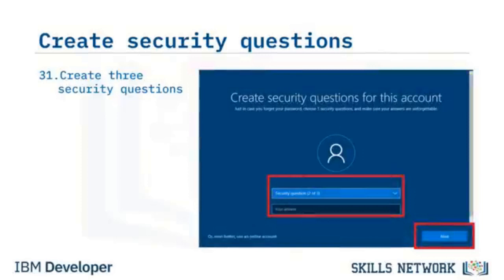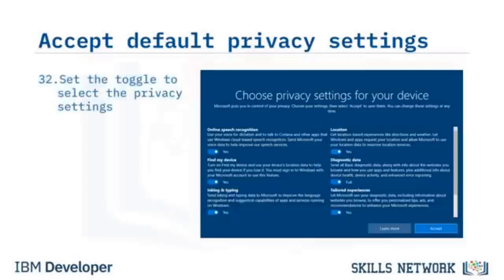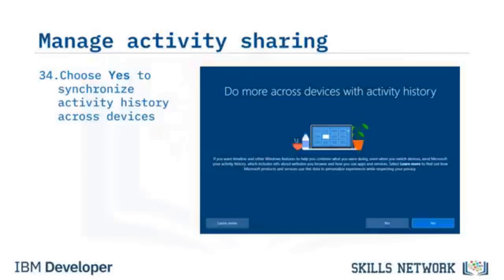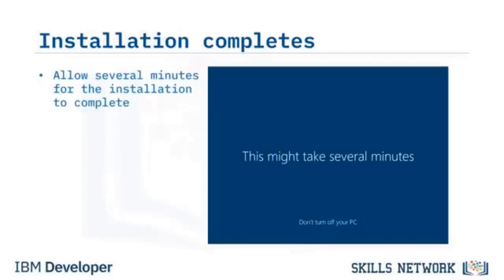Windows will remind you to opt in for a Windows account. For this installation, select Limited Experience to stay offline and click Next. Type a username and click Next. Create a password — in this demo, the password is 'PA$$W0RD,' though in real life you should follow good password practices. You'll type the password again to confirm, then create three security questions for account recovery. Set toggle switches to enable Microsoft capabilities including speech recognition, device location, diagnostic data, and tailored experiences, then click Accept. Microsoft offers the option to synchronize activity history across devices — click Yes to accept.